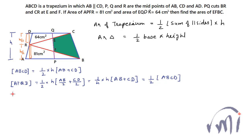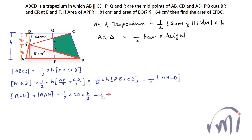The sum of areas of triangle RCD and triangle RAB equals 1/2 times CD times H/2 plus 1/2 times AB times H/2. Taking H/4 common, we get H/4 times (CD + AB), which is again equal to half of the area of trapezium ABCD.